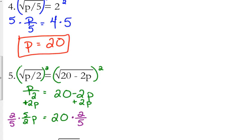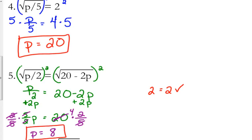Dividing by a fraction is the same as multiplying by its reciprocal — we talked about this yesterday. The 2 over 2 cancels and the 5 over 5 cancels, leaving just p. For 20 times 2 fifths: 20 times 2 is 40, and 40 divided by 5 is 8, so p equals 8. If you plug that into both sides — 8 divided by 2 is 4, square root of 4 is 2 on the left side; 20 minus 2 times 8 is 4, square root of 4 is 2 on the right. So p equals 8 is our solution.